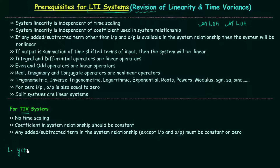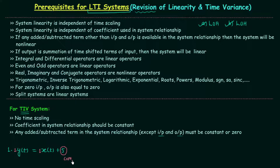In example one, y(t) = x(t) + 5. We first check if the system is time invariant. The first condition requires no time scaling — there is no time scaling in either input or output, so condition one is satisfied. The second condition requires constant coefficients — the coefficient here is 1 for both y and x, so condition two is satisfied. The third condition requires any added or subtracted term other than input and output to be constant or zero — the term 5 is constant, so condition three is also satisfied. Therefore this system is time invariant.